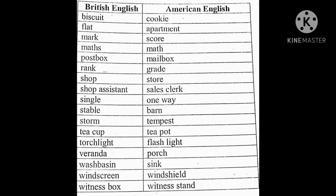Maths — math only in American English. Post box — mail box. Rank — grade. Shop — store. Shop assistant — sales clerk. Single — one way. If you go from Salem to Chennai and return, that's a double way. But if you only go one direction and stay, you get a single ticket — that is 'single one way.'